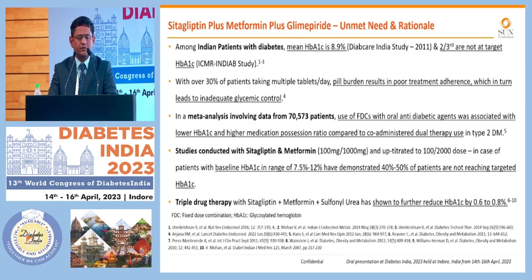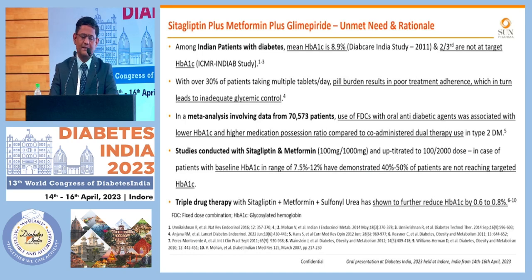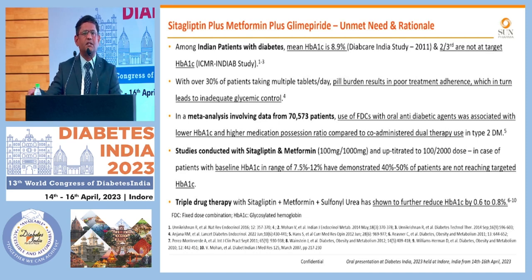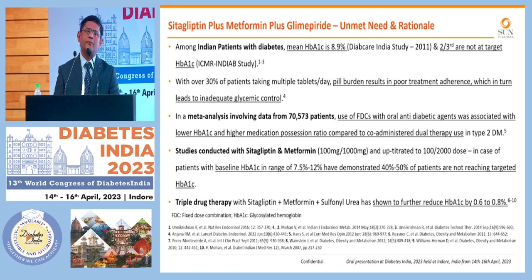In terms of the Indian patient, when we look at the average HbA1C level, it is almost 8.9% in most patients and the target is not achieved in the majority of patients. That is the reason most patients are on multiple drug therapy. When we talk about multiple drug therapy, adherence is one of the most important parameters to consider for glycemic control. This vicious cycle starts where the patient is on multiple drug therapy, adherence is a problem, and it leads to not reaching the target glycemic control.